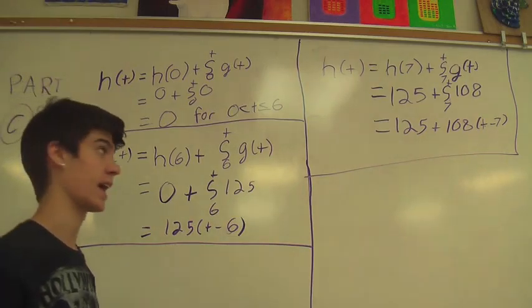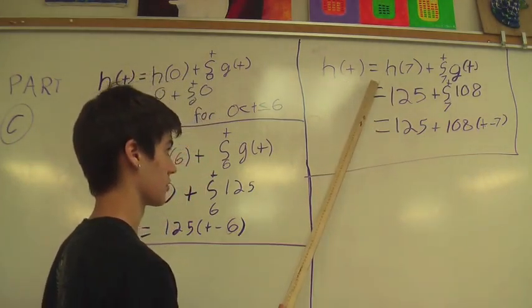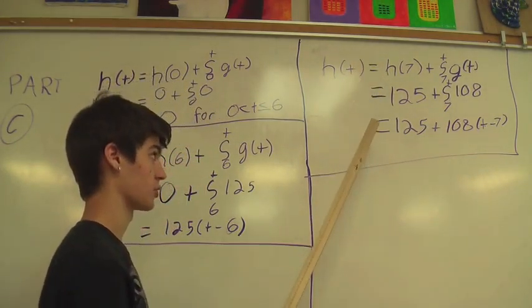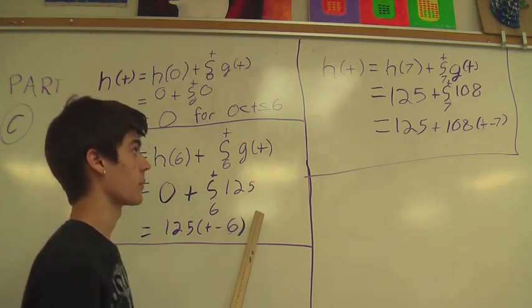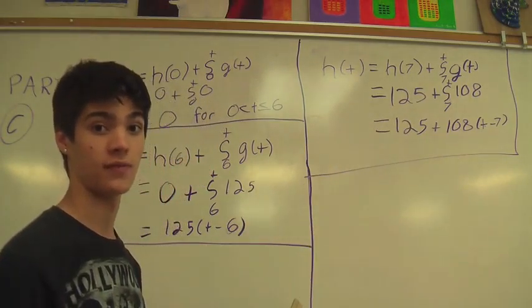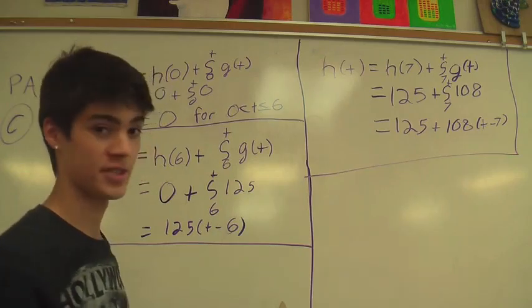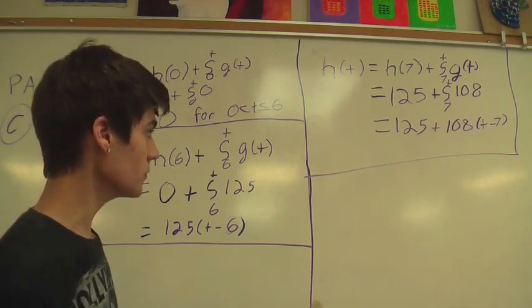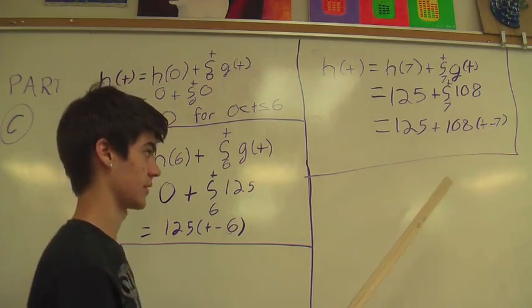For 7 a.m. to 9 a.m., we found the initial value at 7 a.m., which was 145, and then we added the amount he shoveled at the rate of 180 feet per hour from 7 to 9 a.m.